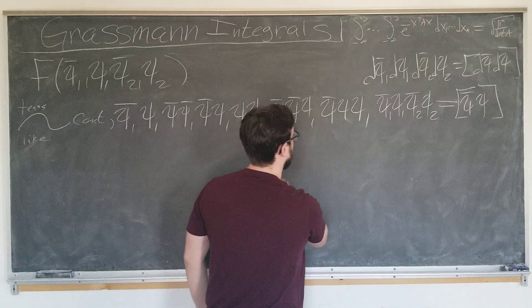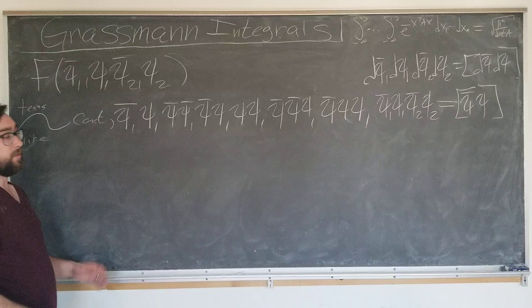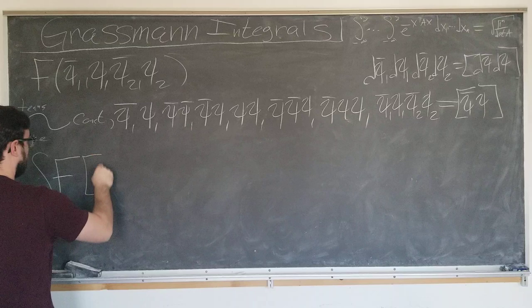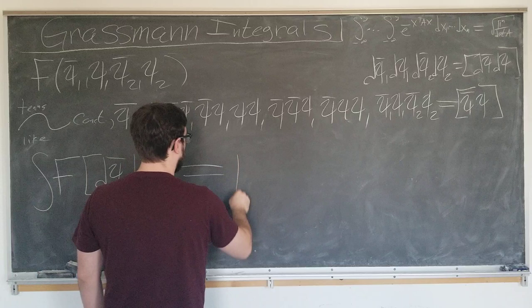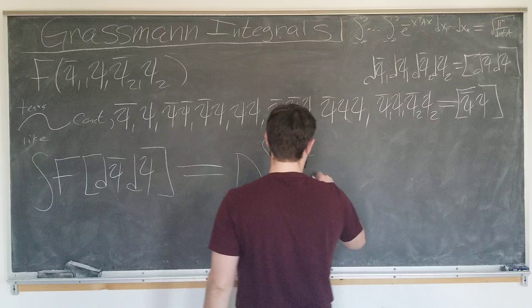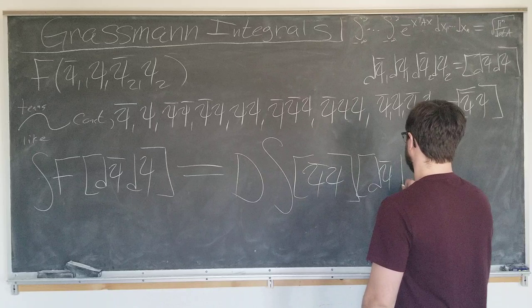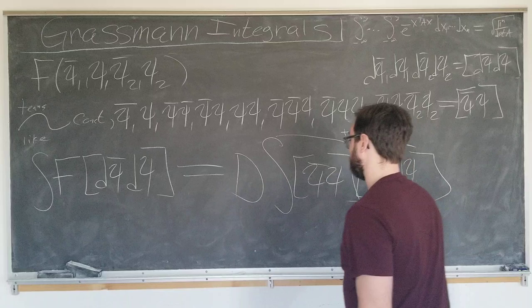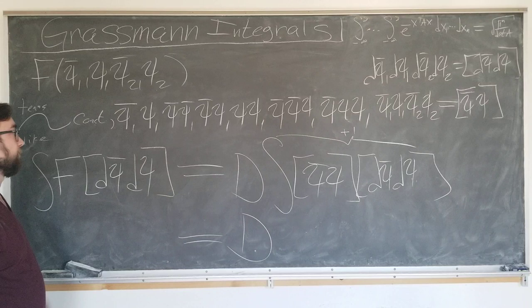We know from previous experience that only the last term in the Taylor expansion will matter when we integrate the function. Let's go ahead and just write down what we know. Know that integral of the function with respect to our integration measure d psi bar d psi is going to be some constant, which is typically called d, this is known as a d term in the expansion, times the integral of the last term with respect to the measure.